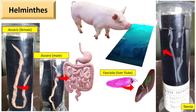Helminths are worm-like parasites that survive by feeding on living hosts to gain food and shelter. They cause illness to the host. Commonly known helminth groups are Platyhelminthes, also called flatworms, and Aschelminthes or Nematoda, meaning roundworms. Flukes are flattened, oval, and leaf-shaped worms. There are two types: tissue flukes and blood flukes. Their infections are most common in Asia, Africa, South America, and the Middle East.